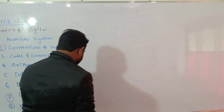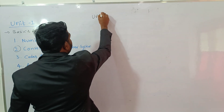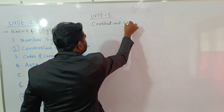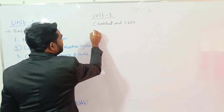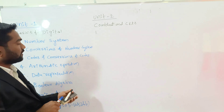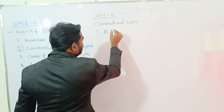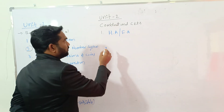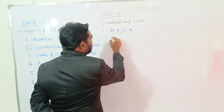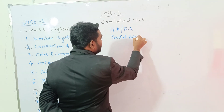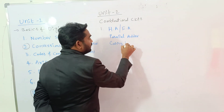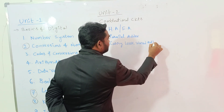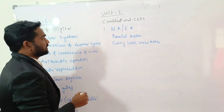The second unit is Combinational Circuits. In combinational circuits, the first part covers Half Adder, and we will also learn about Full Adder. The third part is Parallel Adder, and the fourth one is Carry Look-Ahead Adder. These are the four types of adders we are going to learn.